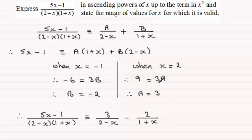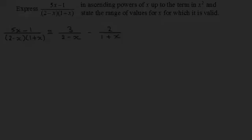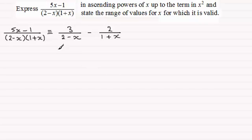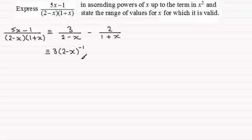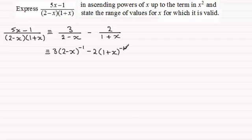So we substitute these values in, giving us the fraction expressed in terms of partial fractions. If you're unsure of this step, do go back and look at my tutorials on partial fractions. Once we've done that first step, what we do next is bring these two denominators up to the top and rewrite them: 3 multiplied by 2 minus x all to the power minus 1, and minus 2 times 1 plus x all to the power minus 1. The next thing we need to do is use the binomial expansion to expand both of these.